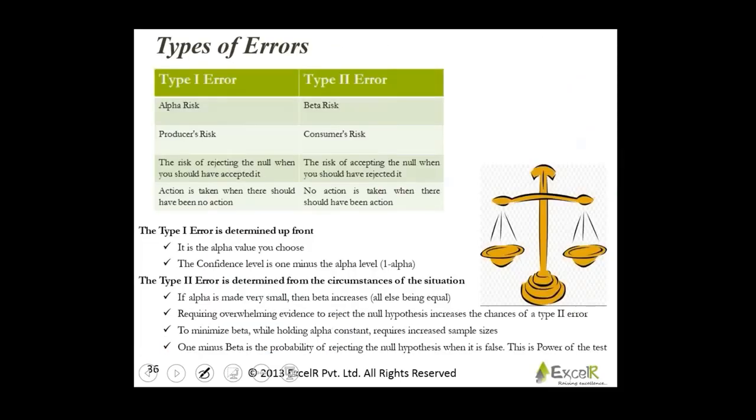Let us move on. Types of errors. We have already discussed this. There is a type 1 error. Type 1 error is also called as alpha risk or the producer's risk. It is a risk of rejecting the null hypothesis when you should have accepted it. Action is taken when there should have been no action. You should have been left scot-free. You should have been termed as innocent and left alone. But they have imprisoned you. Though you were innocent, they have imprisoned you.